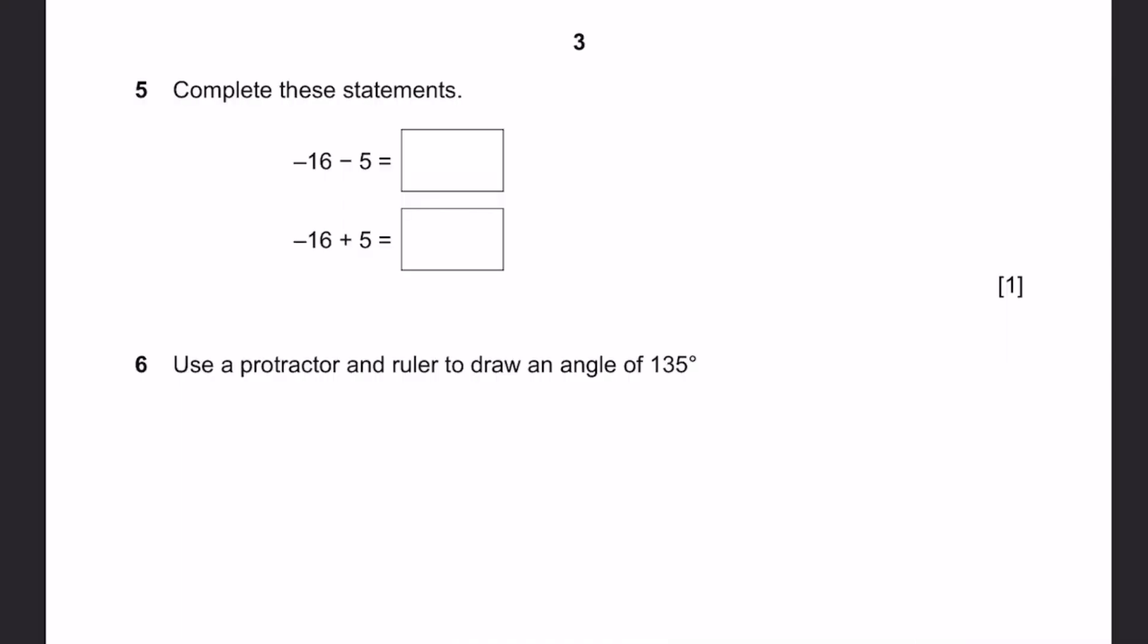Question 5, complete these statements. Minus 16 minus 5 is equal to minus 21. You can also write this as minus of 16 plus 5. That'll be simply minus 21 as you write here. Minus 16 plus 5, that'll be the same thing as minus of 16 minus 5. That's minus 11.